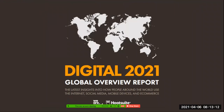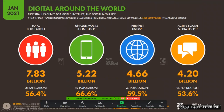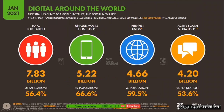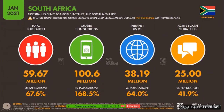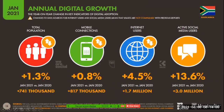These are digital stats from January 2020. The global population is 7.8 billion; 4.2 billion social media users; 4.6 billion internet users. The population grew by 1%, but social media grew by 13.2%. In South Africa, the population grew to 59 million with around 100 million mobile connections — meaning almost everybody has two cell phones. Active social media users is 25 million. The SA population grew by 1.3% but social media in SA grew by 13.6%. Social media is growing drastically.